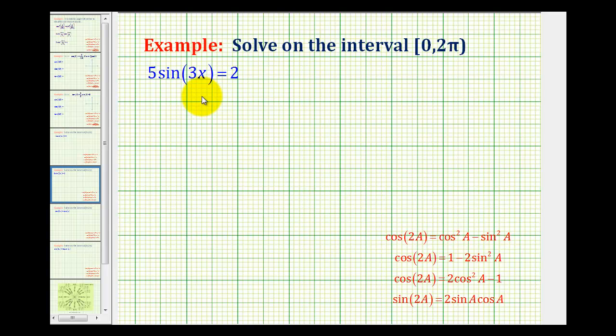It may be tempting to use a sum or difference identity, or even a double angle identity, but these problems are much easier to solve if we just replace 3x with θ, since there's only one trig function involved in this equation.